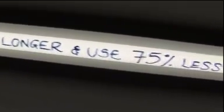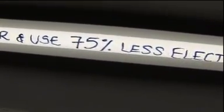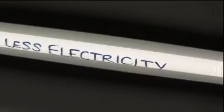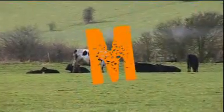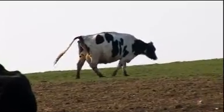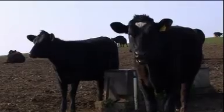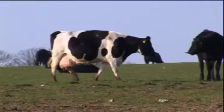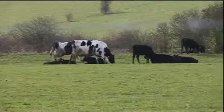L is for light bulb. M is for methane. 100 million cattle farting methane into the atmosphere make it the second biggest contributor to global warming.